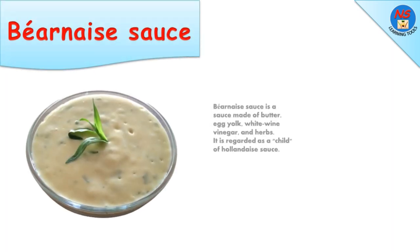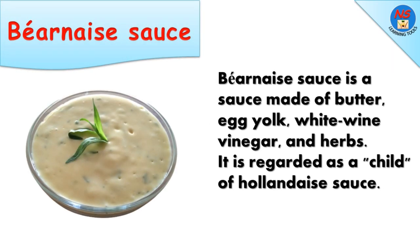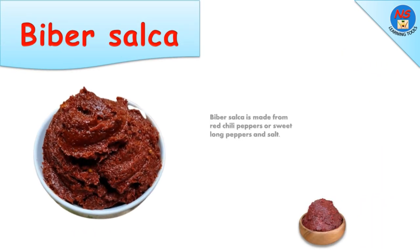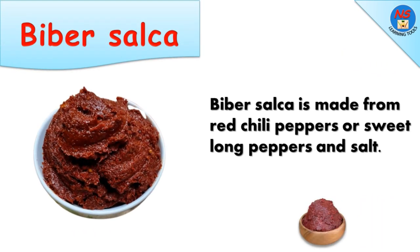Béarnaise sauce is a sauce made of butter, egg yolk, white wine vinegar, and herbs. It is regarded as a child of hollandaise sauce. Biber salka is made from red chili peppers or sweet long peppers and salt.